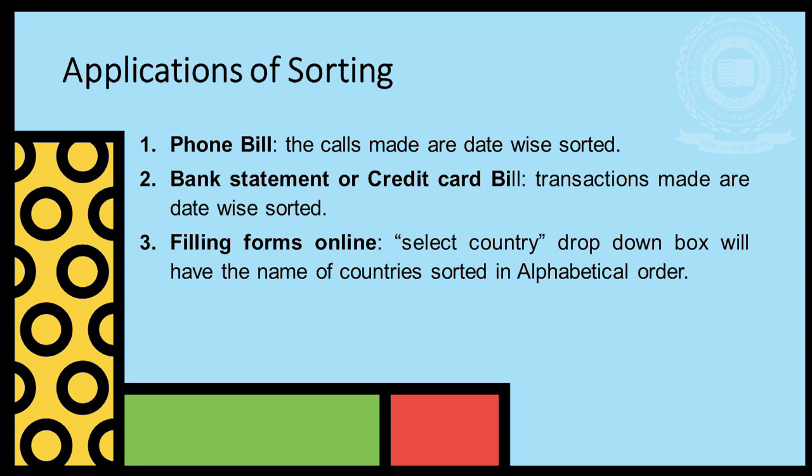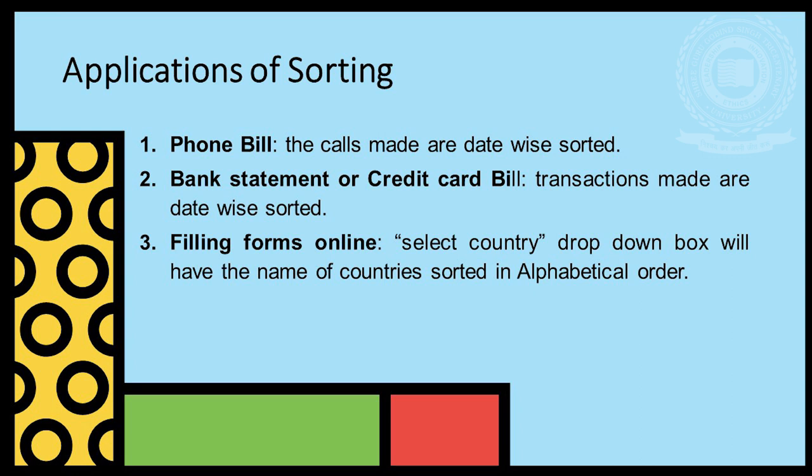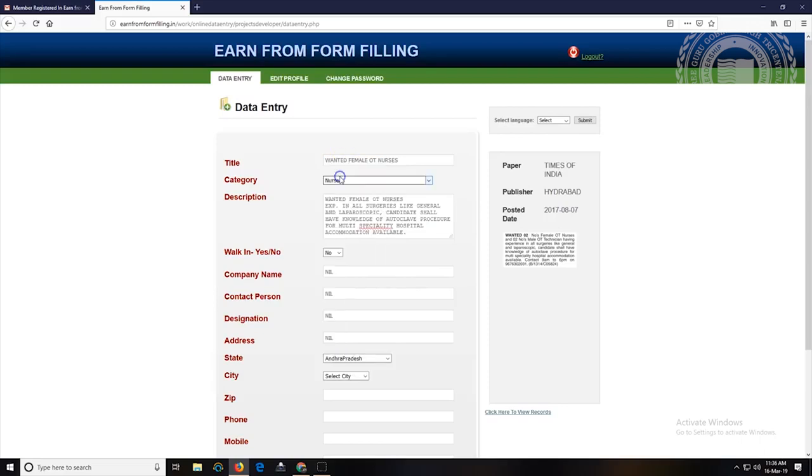Thirdly, filling online forms. In this video, we select state and city with a drop-down list with respect to alphabets.